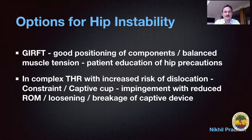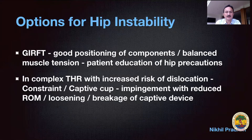To prevent hip instability, getting it right first time should be the goal — good positioning of the component, balanced muscle tension, and patient education are the mainstay. In complex total hip replacement with an increased risk of dislocation, we've tried constrained and captive hips previously, but they lead to impingement with reduced range of motion, which in turn can lead to loosening and breakage of the captive device.